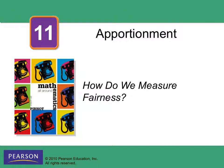Today we are going to continue with 11.4 and learn three different apportionment methods using that new way of calculating, like we did with the Hamilton method last week. These are again founding fathers or people running our early government coming up with these apportionment methods, and they are extremely similar to each other, so you need to pay attention to what they do.